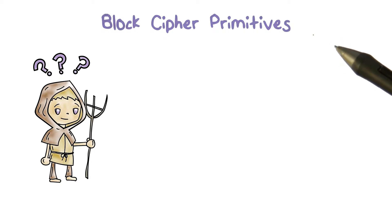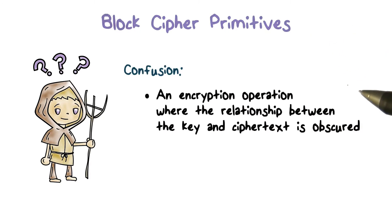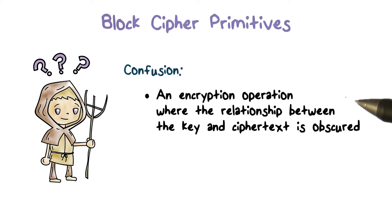In order to accomplish this, we apply two principles. The first is called confusion. It is a way to obscure the relationship between the key and the ciphertext. That is, although the attacker can obtain the ciphertext, the attacker will not be able to find out the key.